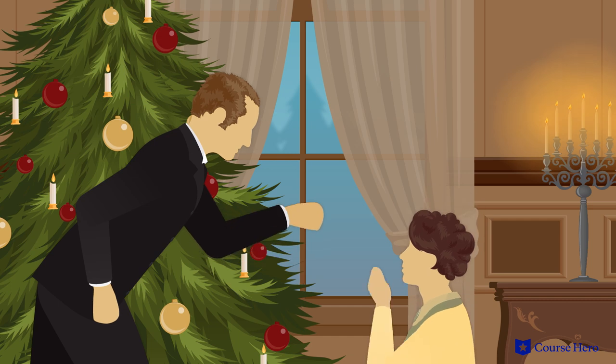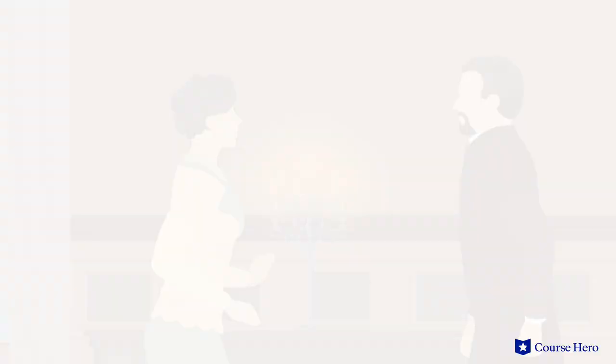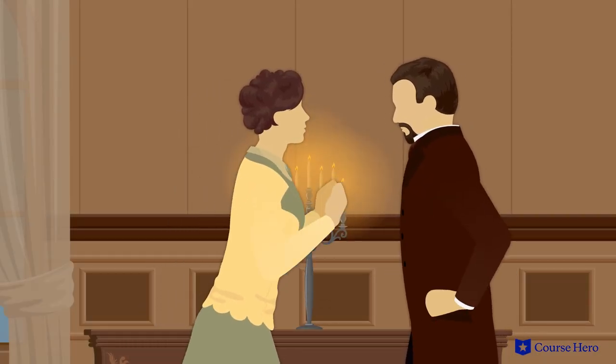Krogstad blackmails Nora, wanting her to influence Torvald to let him keep his job. When Nora refuses, Krogstad reminds her that she has committed fraud by forging her father's signature for the loan. Nora tries to persuade Torvald not to fire Krogstad.